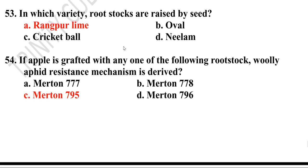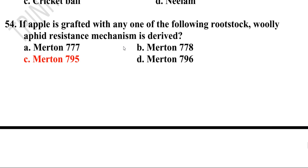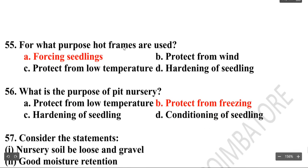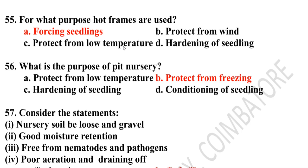Fifty-fourth question: In which variety are rootstocks raised by seeds? The answer is Rangpur lime. Fifty-fifth question: If apple is grafted with one of the following rootstocks, only a disease-resistant mechanism is derived from Merton 795, which is the correct answer.